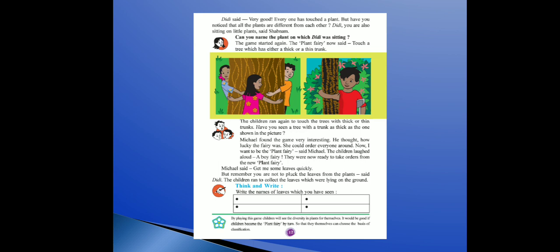They were now ready to take orders from the new plant fairy. Michael ne order diya: quickly go and collect leaves — quickly means fast, jaake sab log pattiya laao, leaves means pattiya. But remember, you are not to pluck the leaves from the plant, said Didi. Aapko yeh pattiya plant mein se tod ke nahi laani hain.